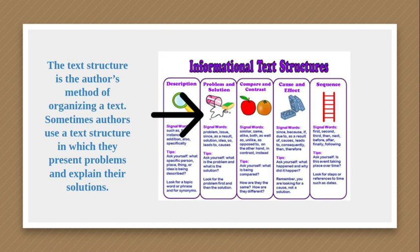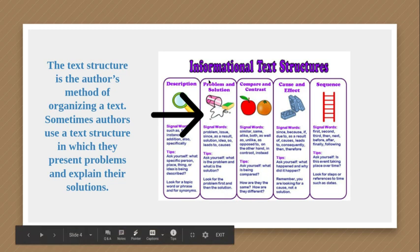The text structure is the author's method of organizing a text. Sometimes authors use a text structure in which they present problems and then explain their solutions. We've talked about several different text structures: description, comparing and contrasting, cause and effect — that was just last week — and sequence. Today, we are just focusing on Problem and Solution.